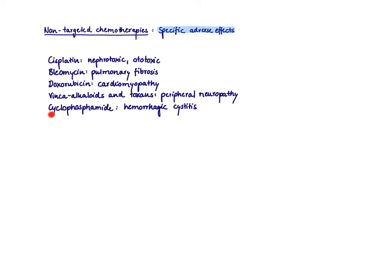Then we have cyclophosphamide, which causes a very specific side effect, which is hemorrhagic cystitis. Itis, again, for inflammation, cyst for bladder. So it's going to be an inflammation of the bladder involving bleeding. The toxicity to the bladder is caused by a metabolite that is formed from cyclophosphamide. It's called acrolein.